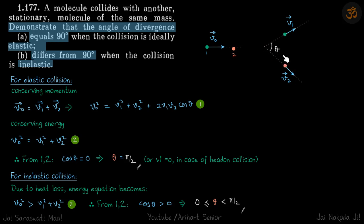The divergence is the angle between them. We need to prove that if this collision is elastic, then this angle is always 90 degrees, and when the collision is not elastic or if it is inelastic, then this angle is not 90 degrees.